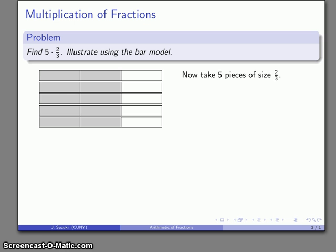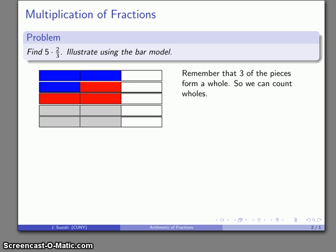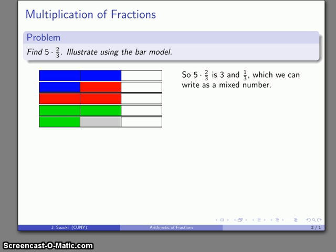Now how big is that product? The thing to keep in mind is that 3 of these rectangles made up our 1 unit. So I can count wholes by finding sets of 3 rectangles: 1, 2, 3, and there's 1/3 left over. I can write my result as a mixed number. 5 times 2/3 equals 1, 2, 3, and 1/3 left over. There's my product: 3 and 1/3.